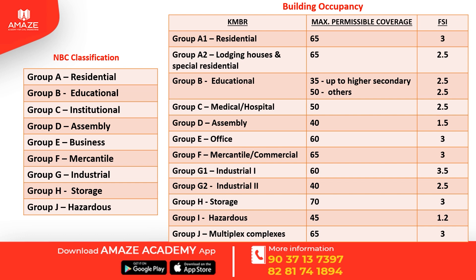Maximum permissible coverage and Floor Space Index (FSI): FSI is built-up area divided by plot area, i.e., total covered area of all floors divided by plot area. For residential Group A1: maximum coverage 65%, FSI 2. For Group A2: maximum coverage 65%, FSI 2.5. For educational buildings: maximum coverage 35% for up to higher secondary, 50% for others, FSI 2.5.